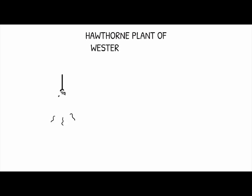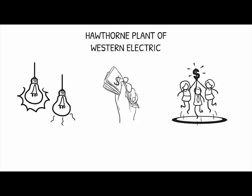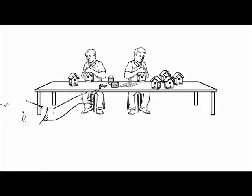The human relations movement was tested extensively in the Hawthorne plant of Western Electric, where worker productivity was tested over a variety of changing conditions, including lighting changes, pay incentives, and group pay incentives. Researchers found that workers developed their own unspoken system of performance.